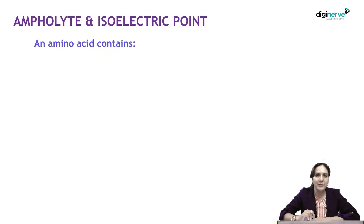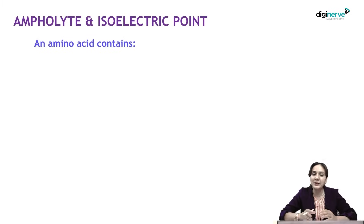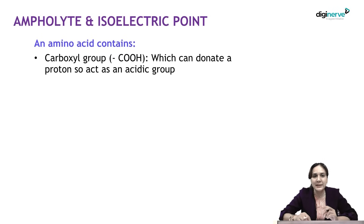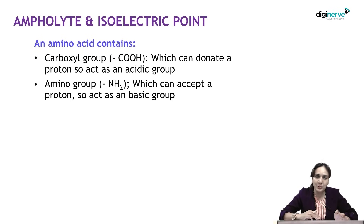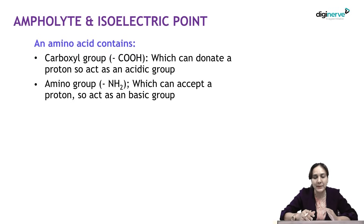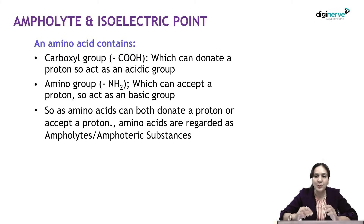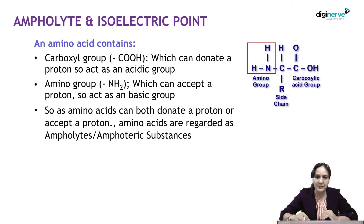First of all, why are amino acids known as ampholytes? As discussed in the previous lecture, amino acids contain a carboxylic acid group which can donate a proton and act as an acid, and an amino group which can accept a proton and act as a basic group. Because of the presence of both acidic and basic groups, amino acids are known as ampholytes or amphoteric substances.